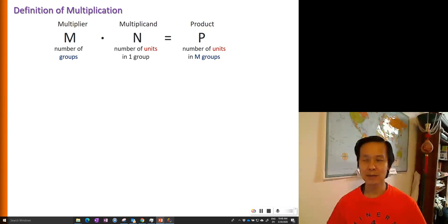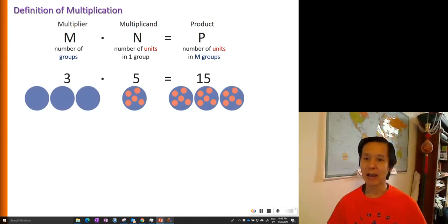Let's take a look at an example. 3 times 5 equals 15. It can be understood that there are 3 groups and there are 5 dots in each group. So all together, there are 15 dots.